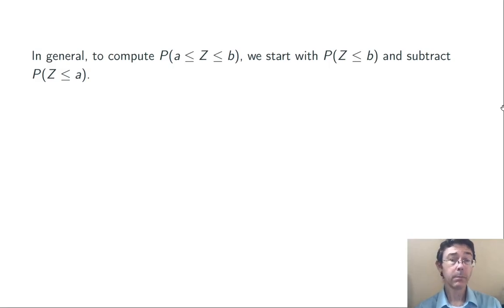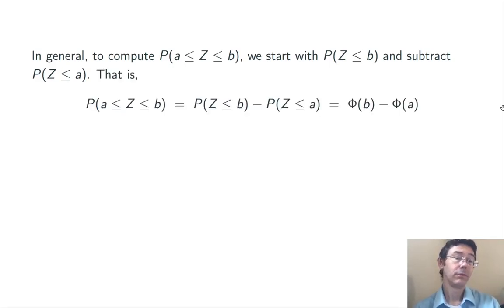More generally, if we want to compute the probability that a z-score falls in a certain range, we start with the probability that z is less than or equal to the upper bound, and subtract the probability that it's less than or equal to the lower bound. So, the probability that z is between a and b is P(z ≤ b) - P(z ≤ a). Or, to say it more succinctly, Φ(b) - Φ(a).